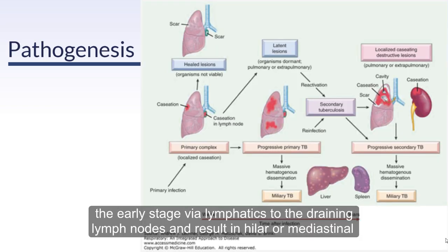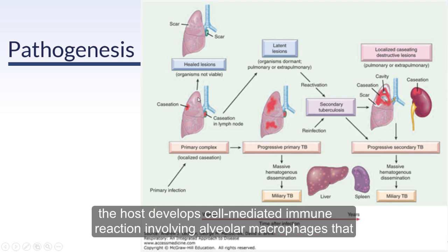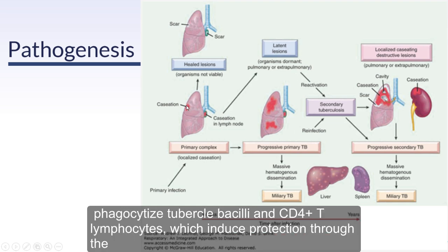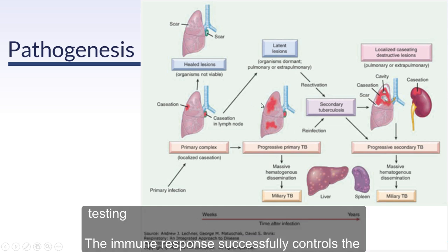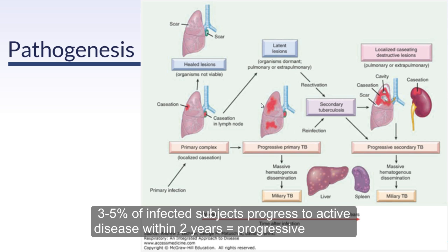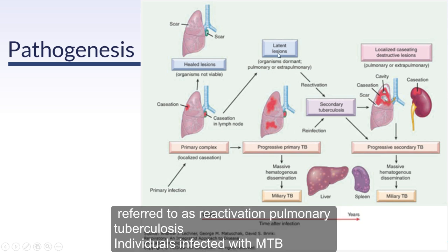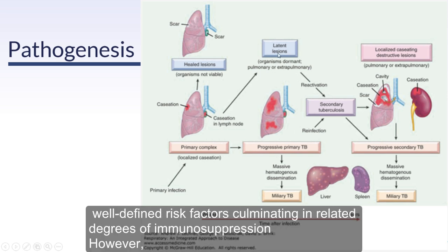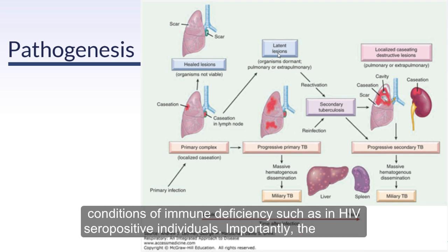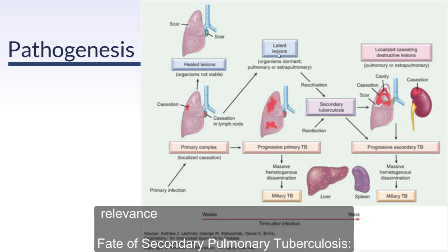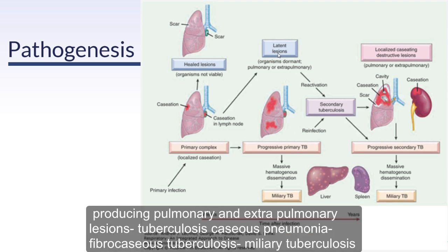Once you have exposure and get this primary focus, you can have primary progressive TB that spreads through the lymphatics and blood to form either pulmonary TB or miliary TB. Alternatively, it can stay walled off, meaning the immune system cannot recognize it, so there's no antigenic response and it can remain latent for years. At any point, depending on host factors — immunosuppression, medications — it can then reactivate.